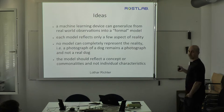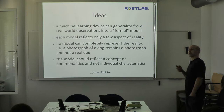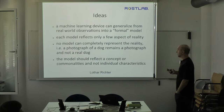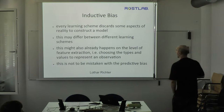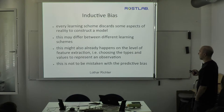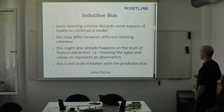No model can completely represent reality. If you have a photograph of a dog, it's not a dog — that difference is clear to everybody. But if you have high-throughput expression data, it's not so obvious that you only have a projection of reality. This model should reflect the general concept or common realities, not the individual characteristics of your observations. Every learning scheme discards some aspects of reality to construct a model — that's the inductive bias, and it differs between algorithms.